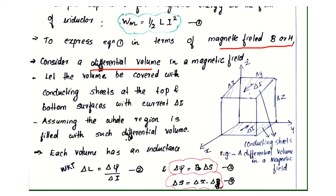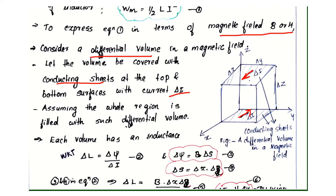Let the volume be covered with a conducting sheet at the top and bottom surfaces with current delta I. The top current moves in one direction and the bottom current moves in the opposite direction. Assuming that the whole region is filled with such differential volumes, the magnetic field will be filled with such a differential volume.